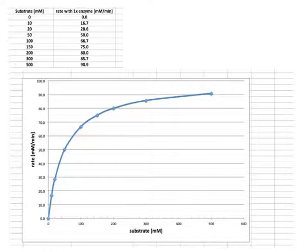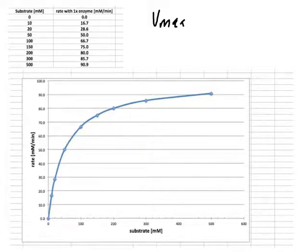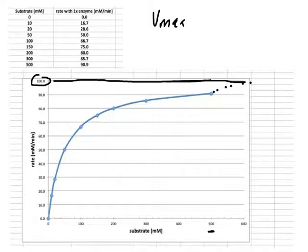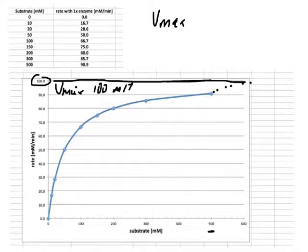Now we have our graph — what does it tell us? From this graph we can try to estimate our Vmax. Vmax is the maximum speed when we have lots and lots of substrate. Of course our maximum substrate concentration here is only 500 millimolar, but it already gives us some indication of what Vmax could be. We probably have to extrapolate, but we can most likely assume that our Vmax would be around 100 millimolar per minute.